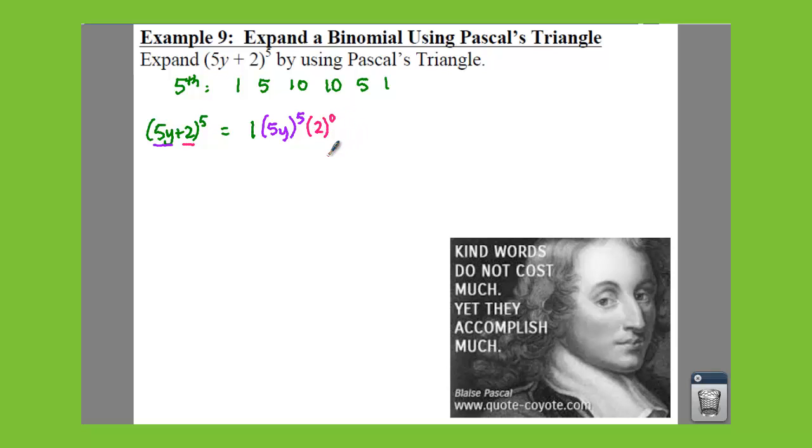And then everything that has the y is going to be moving down, or everything that has the 5y is going to be going in descending order. Everything that has the 2 is going to be in ascending order.